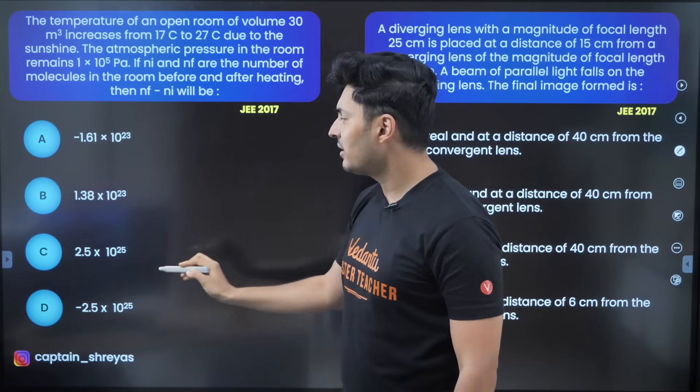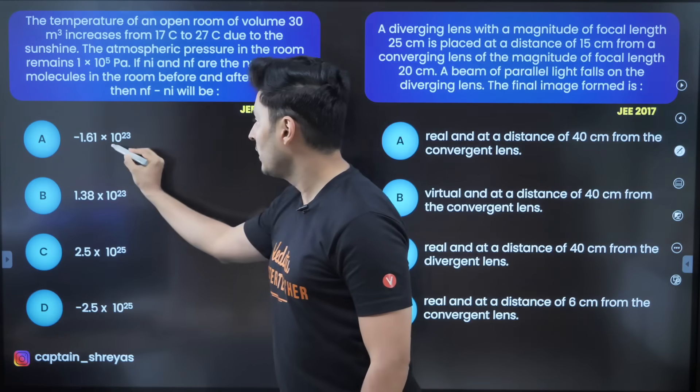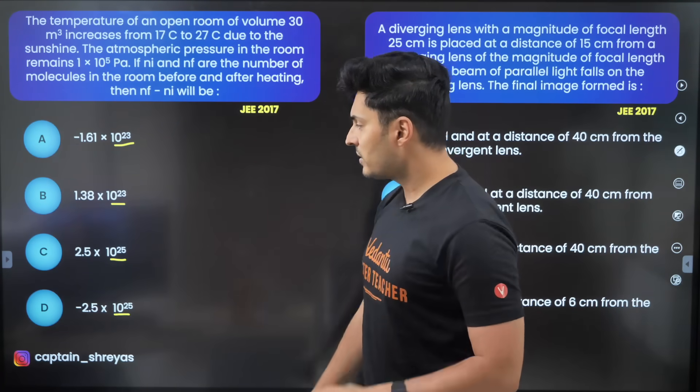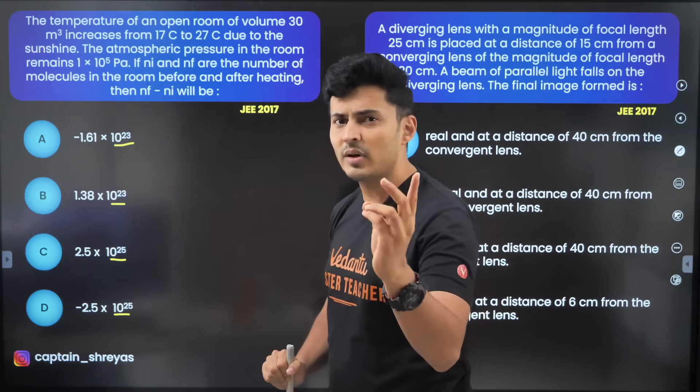Well I can see 10 to the power 23 is common in two options. 10 to the power 25 is also common in these two options but I can also see 2.5 is common, only difference is the sign.